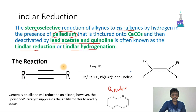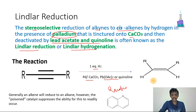The reaction starts with an alkyne as the starting material. We treat it with one equivalent of hydrogen in the presence of palladium over calcium carbonate and lead acetate or quinoline. The starting material is converted into a cis alkene — the hydrogens are in the cis position, making this a stereoselective reduction.